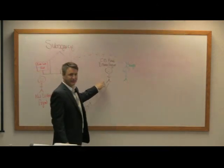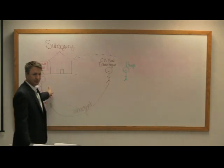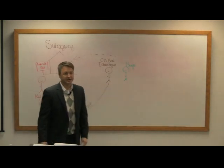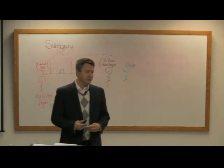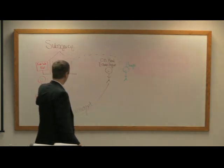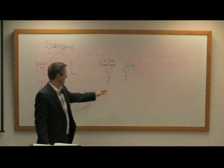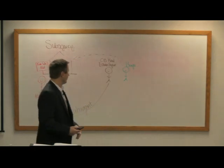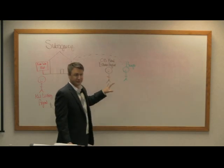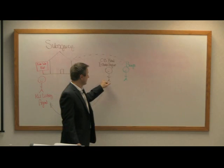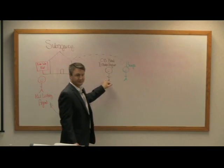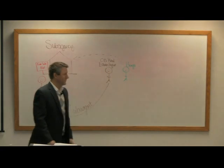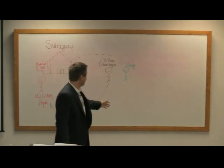What would happen in that scenario is the agent would try to get a portion of the commission from the sale through Keller Williams because they'd been working with the buyer, leading to a commission dispute. If Keller Williams wasn't open to giving compensation, the agent could do arbitration with the local board office, but it would be very difficult since there's no contract and very little proof.